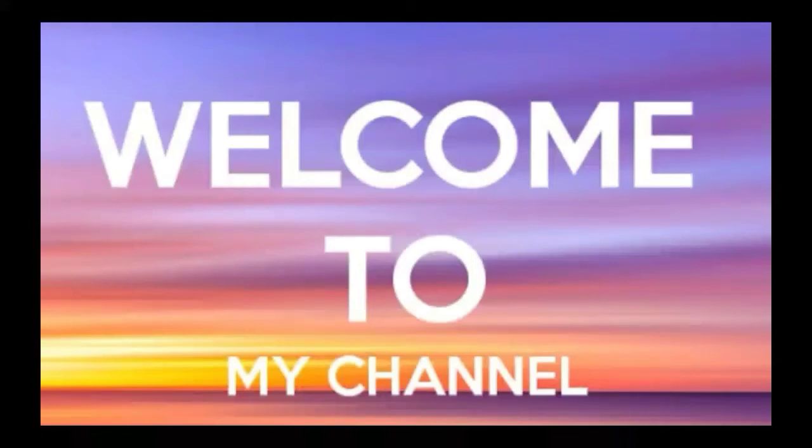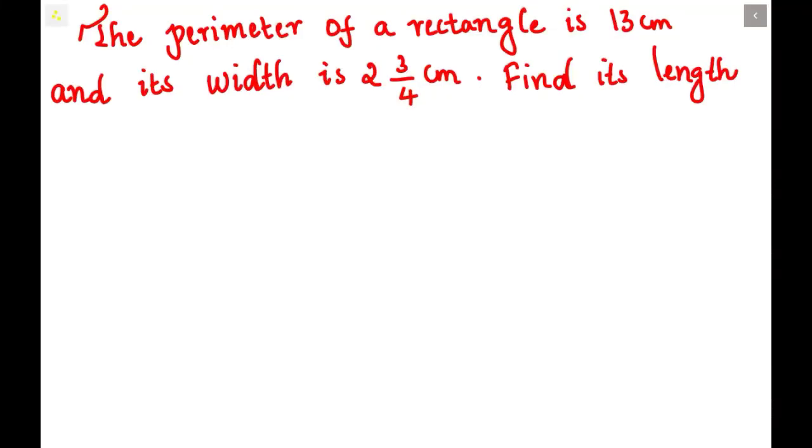Hi friends, welcome to my channel. In this video we are going to solve a new problem: the perimeter of a rectangle is 13 cm and its width is 2 3/4 cm. We have to find the length of this rectangle.